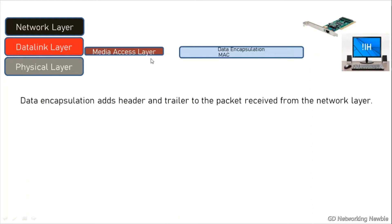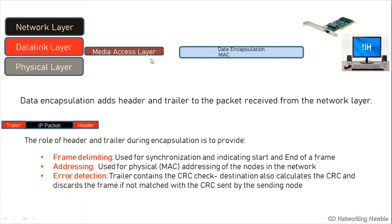The first, data encapsulation, receives the packet from the network layer and adds header and trailer to that IP packet. In this header we have frame delimiting, which identifies the start of the frame - from where the frame is started and where the frame is going to end.